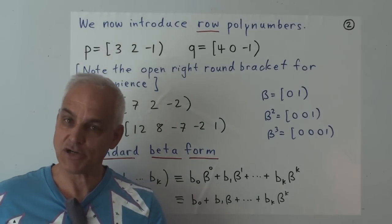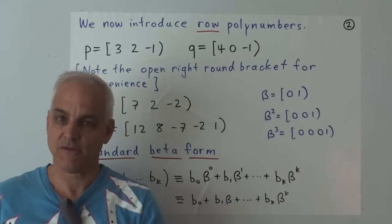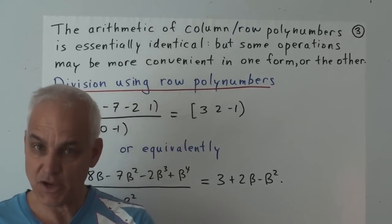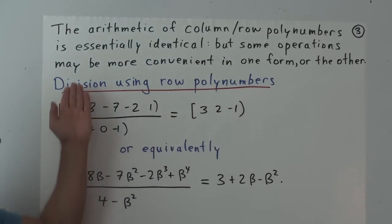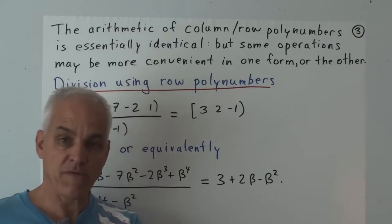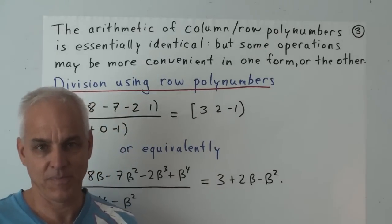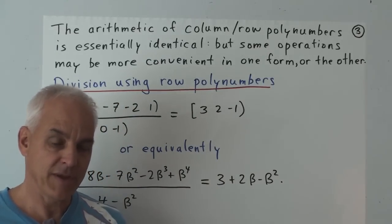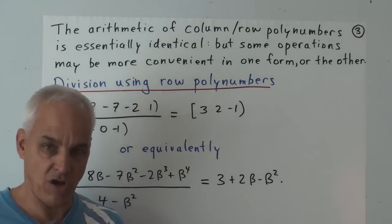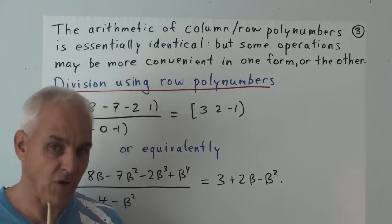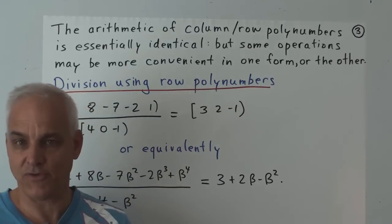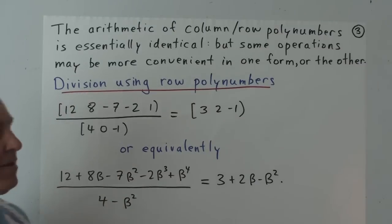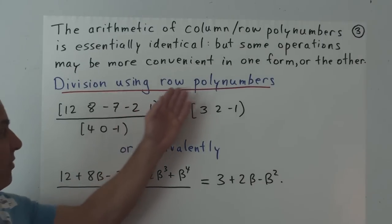We could easily have started our discussion of polynumbers with row polynumbers first. While the arithmetic of column polynumbers and row polynumbers is essentially the same, it may be more convenient to use one form for certain problems. For adding and multiplying, it's usually more convenient to use column polynumbers — which is why I introduced those first. However, division is arguably a little bit easier to connect with ordinary division of numbers when using row polynumbers.